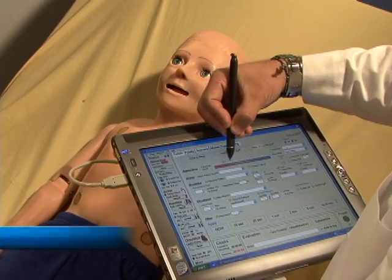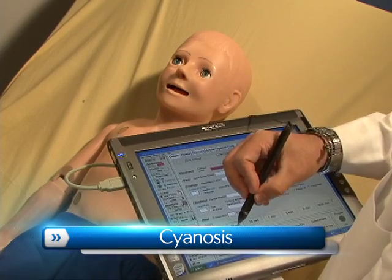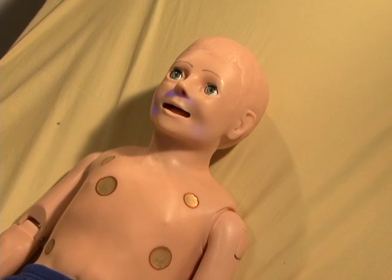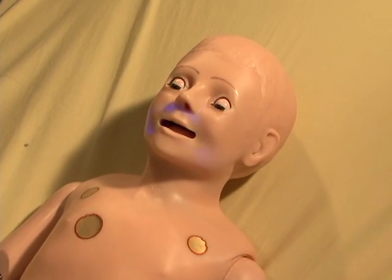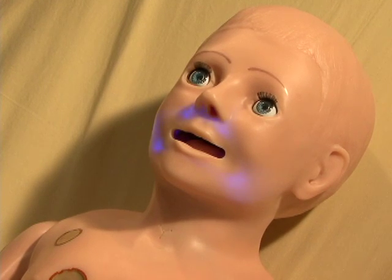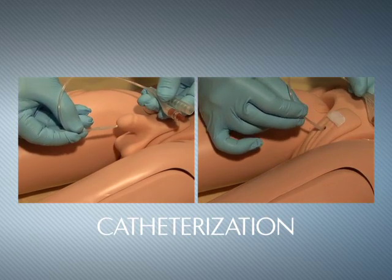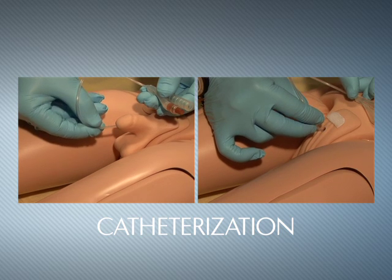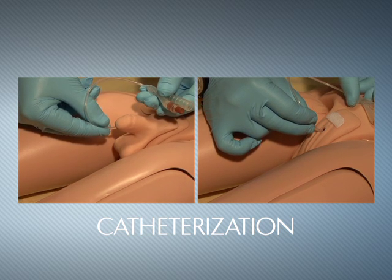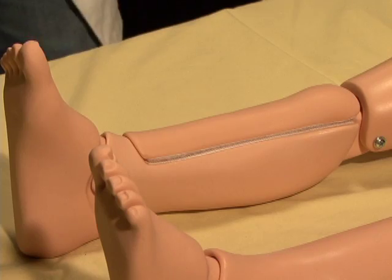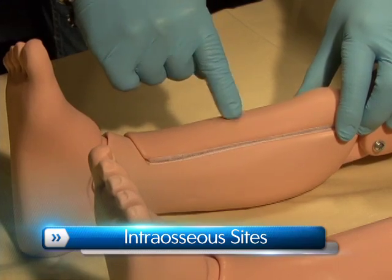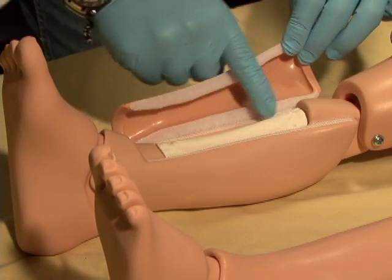Our new cyanosis feature allows the user to control the pallor of pediatric HAL's skin when hypoxic events occur. Pediatric HAL can be catheterized via exchangeable male and female genitalia. The lower right leg has an intraosseous injection site with replaceable tibia bones.